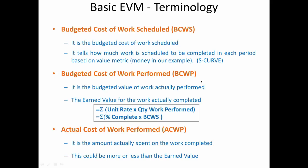Budgeted cost of work performed (BCWP) is the earned value, obtained by multiplying unit rate by quantity of work performed. Alternatively, percentage complete multiplied by BCWS also gives the earned value at that update. Actual cost of work performed (ACWP) is obtained from the accounts — what is maintained in terms of actual cash spent.